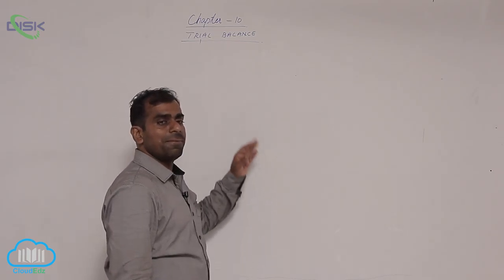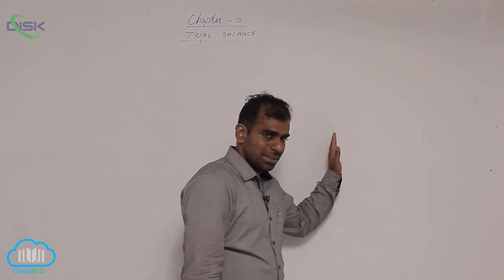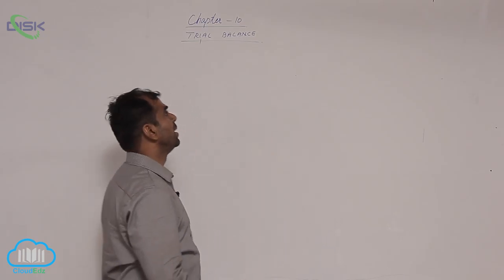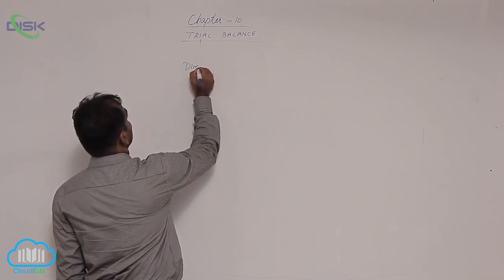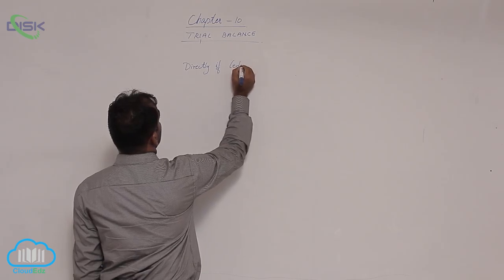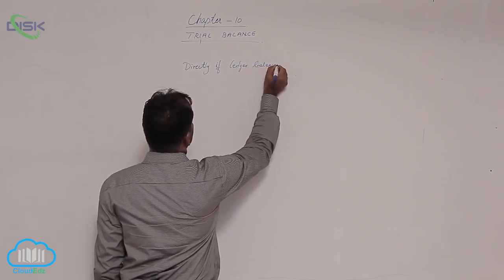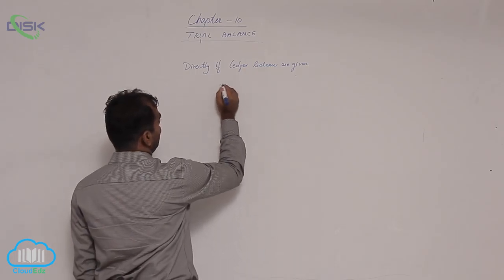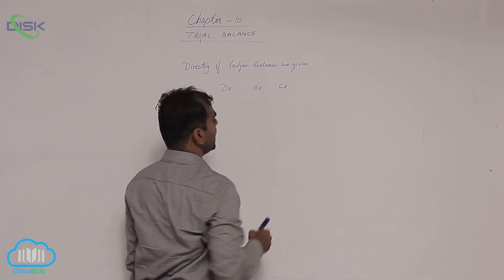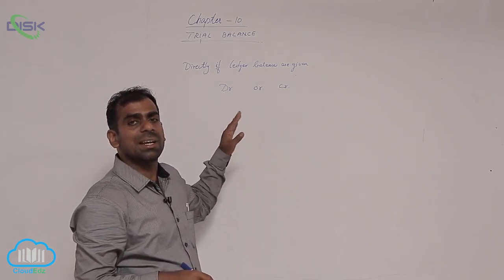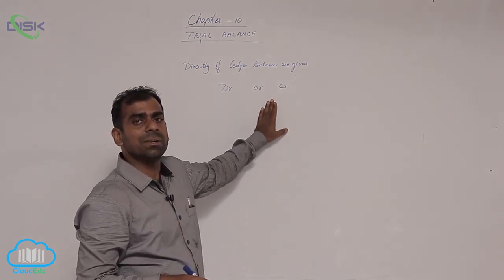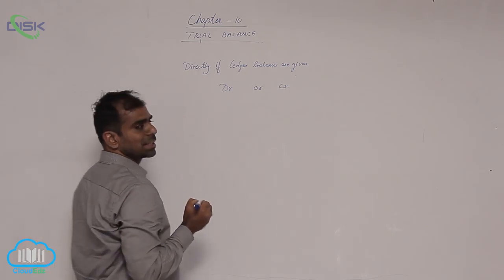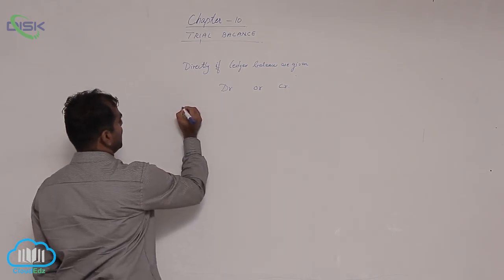In order to prepare a trial balance, if you have done the journal and then the ledgers, it is easy to know which ledger is showing which balance because you are the one who balanced them. But if ledger balances are directly given, how do you identify whether they show a debit balance or a credit balance? It is very easy. Let us quickly recap our important terms in accountancy.